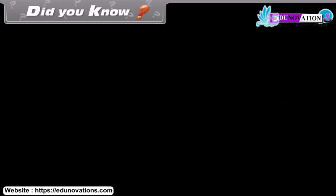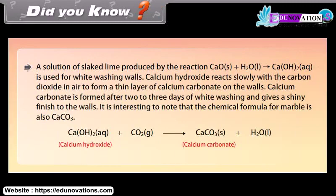Did you know? A solution of slaked lime produced by the reaction is used for whitewashing walls. Calcium hydroxide reacts slowly with the carbon dioxide in air to form a thin layer of calcium carbonate on the walls. Calcium carbonate is formed after two to three days of whitewashing and gives a shiny finish to the walls. It is interesting to note that the chemical formula for marble is also CaCO3.